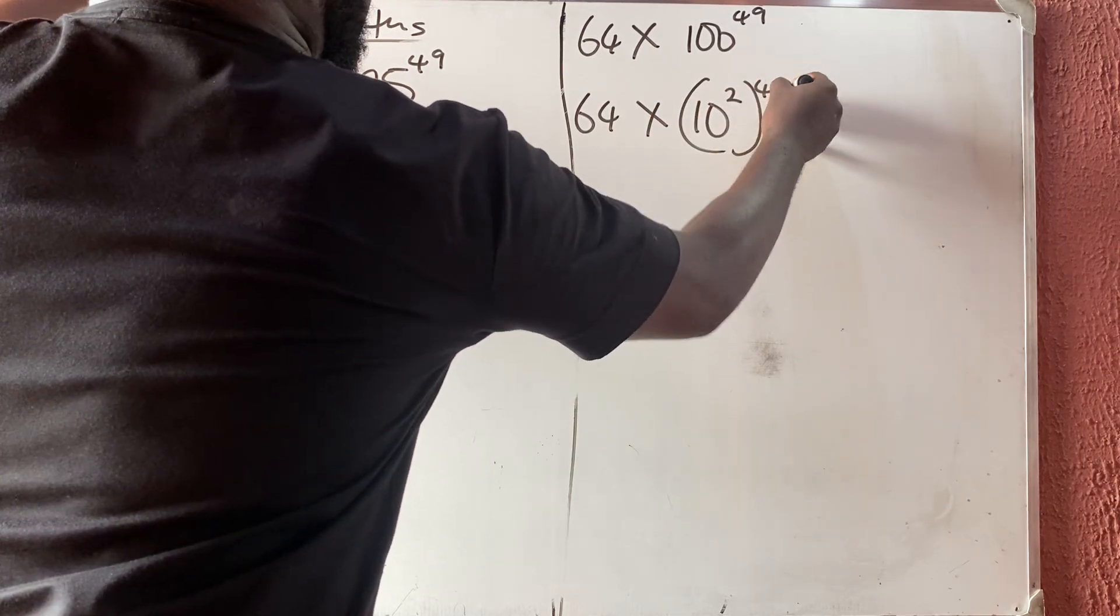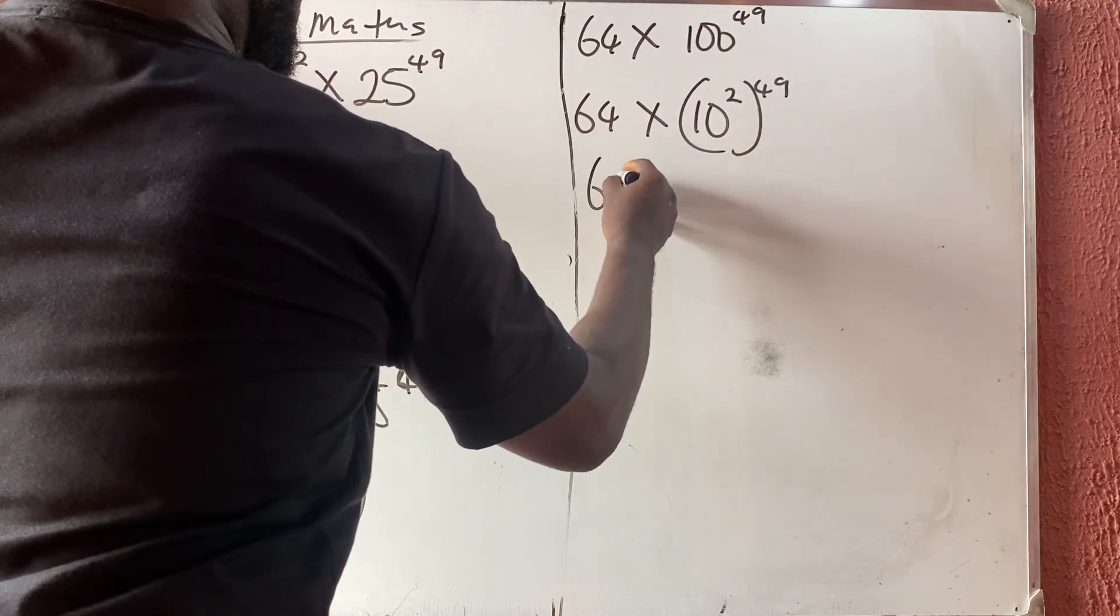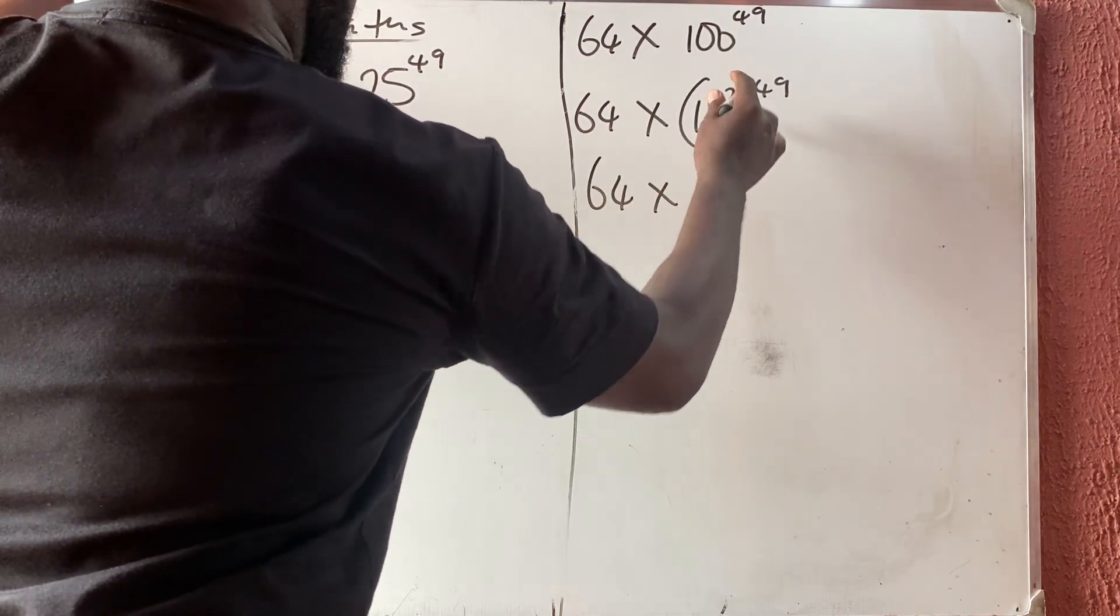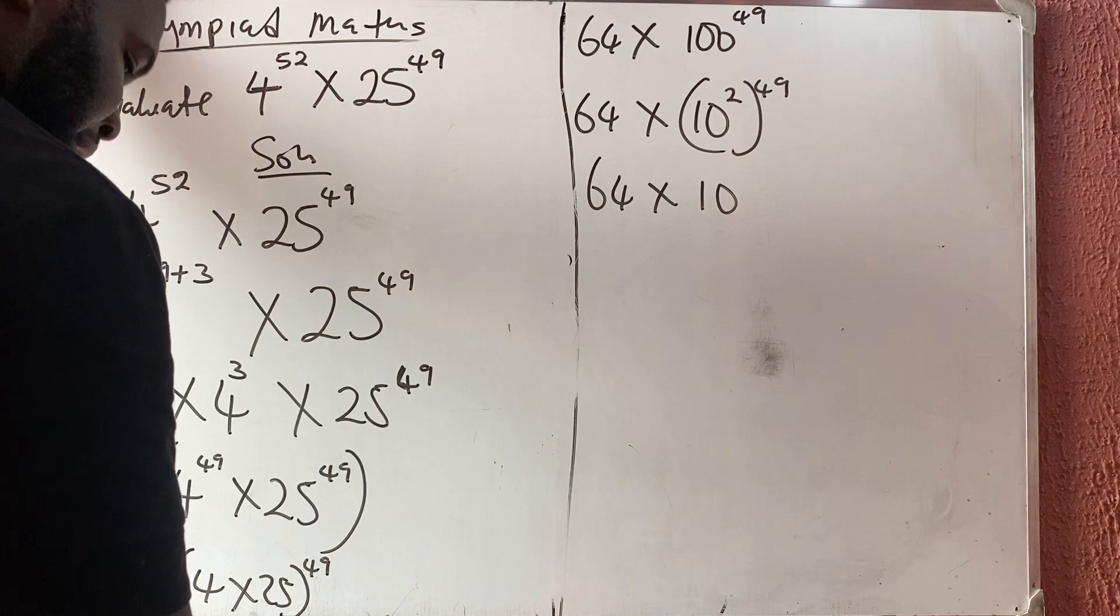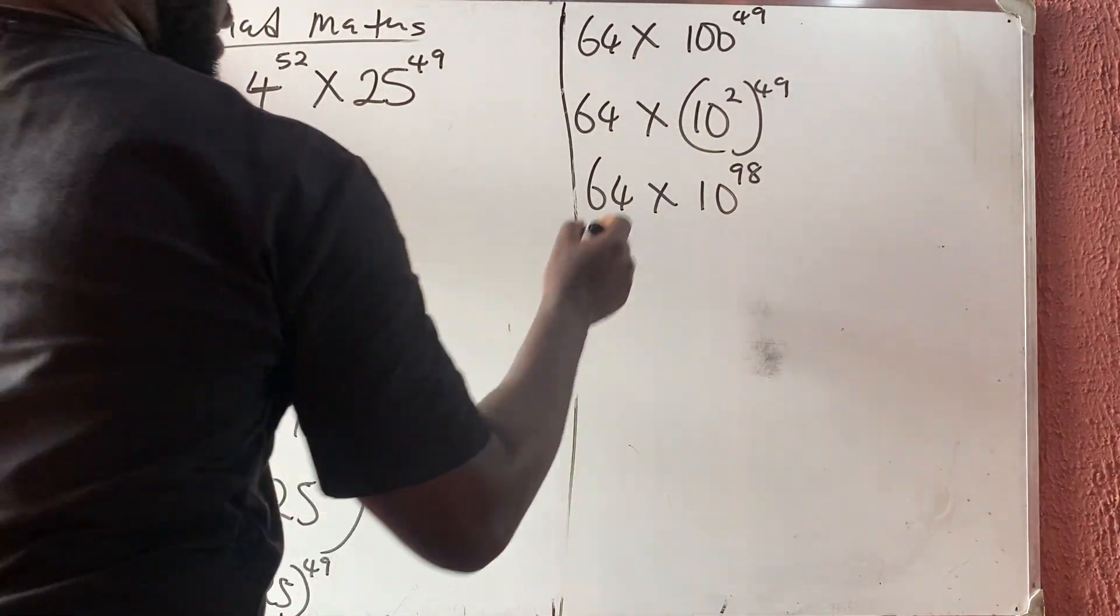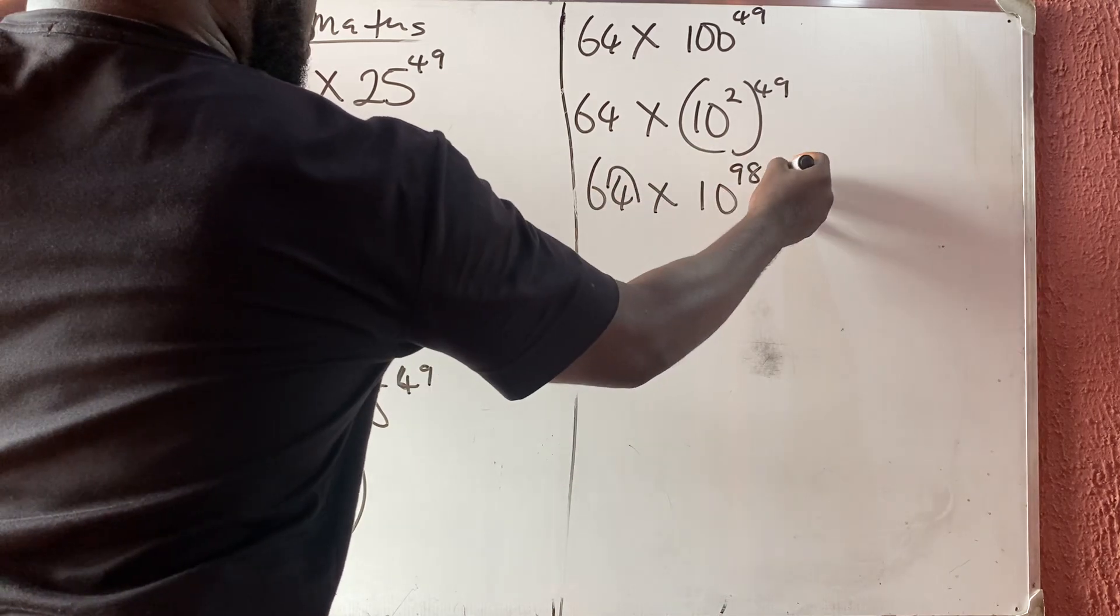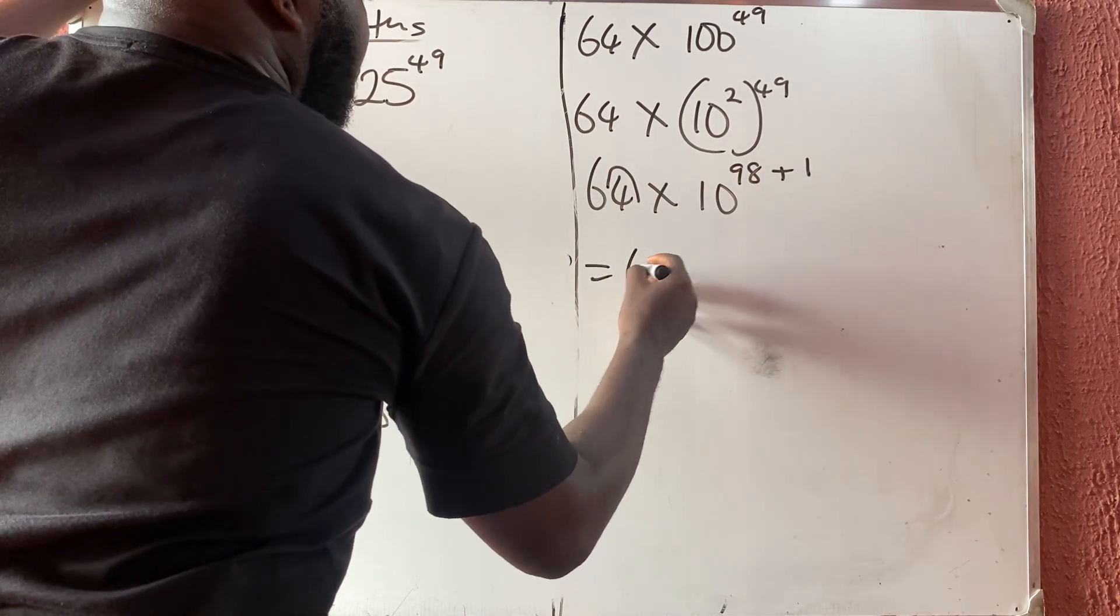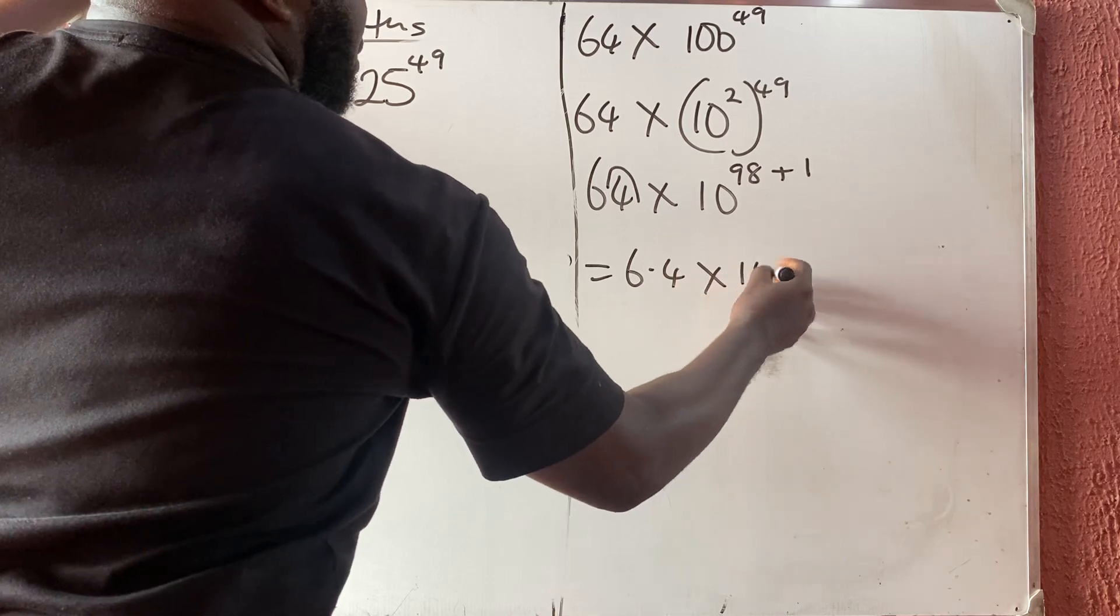10 raised to power 2 is 100, so 64 times 10 raised to power 2 times this will give you 98. Right, 98. So that is the answer, or you can put a point here and go to the left. If I'm going to the left, you add one, so the answer is what? 6.4 times 10 raised to power 99.